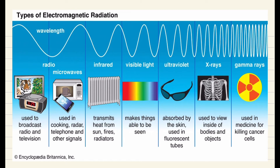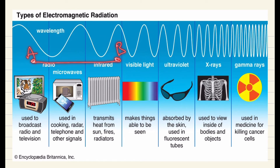One more important fact is that as you move from left to right, the range of the wave will decrease. The radio wave will have the maximum range. Microwaves will have lesser range than radio waves. Range means the distance moving from point A to point B. So the waves will be able to travel less as their wavelength decreases.